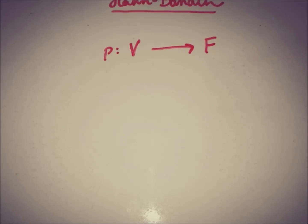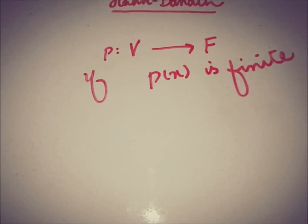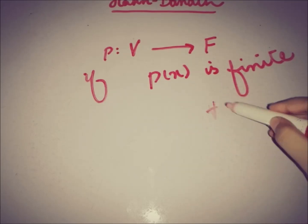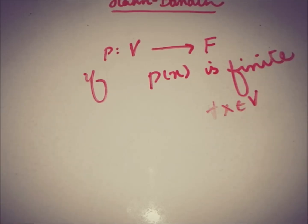This functional P is said to be a finite functional if all of the images of the elements taken from V are also finite — that is, this is true for all X in V. The other concept is the extension of a functional.